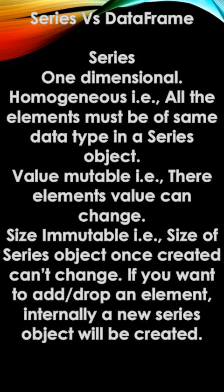What is the difference between Series and DataFrame? Series is one-dimensional because it only has rows — there is an absence of columns. Series takes homogeneous values, meaning all the elements must be of the same data type. In a Series object, if you add one integer value, make sure that all the values throughout the Series are integer.